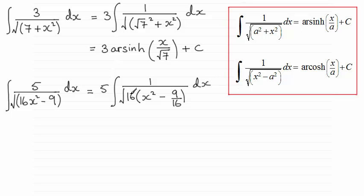So the square root of 16 is 4 so I can bring that 4 out the front of the integral so we've got 5 over 4 and then it'll be the integral of 1 over the root of x squared minus 9 sixteenths. So it then has this form where a will be the root of 9 sixteenths, 3 quarters.